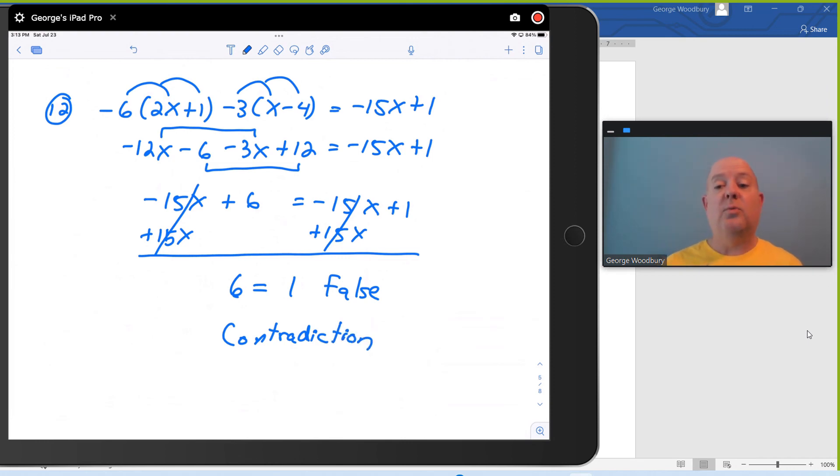6 will never equal 1 no matter what value we pick for x. So this is never true. This has no solution. And the way we write the solution set is with this symbol, the circle with that diagonal slash through it. This is called the null set or the empty set. And again, that means that this equation has no solutions to it.